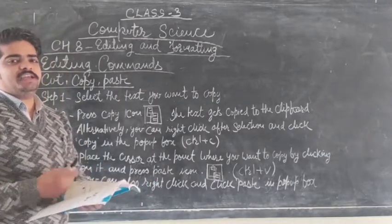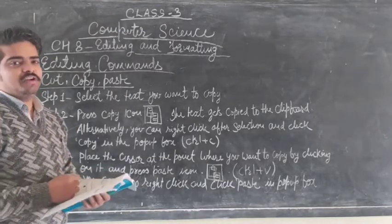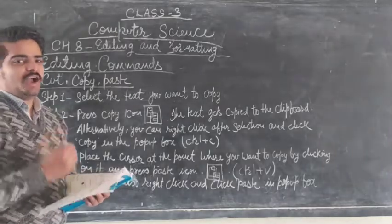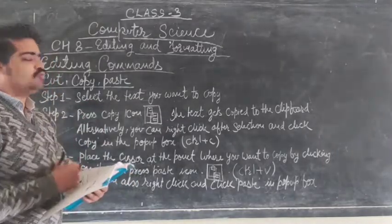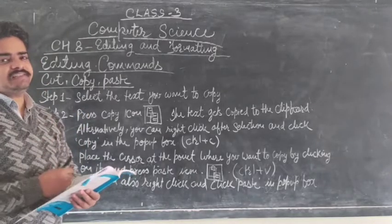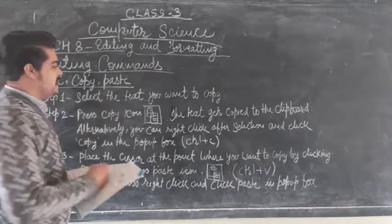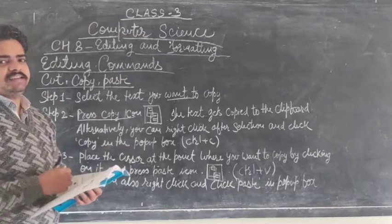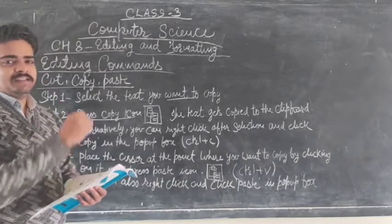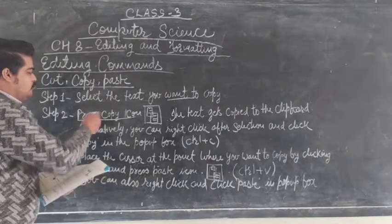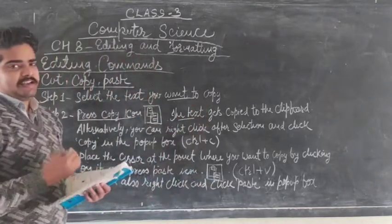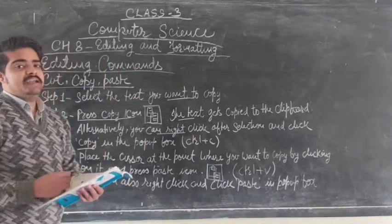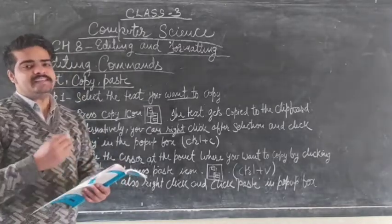Now the fourth editing option in MS Word is cut, copy and paste. For copy and paste: Step 1, select the text you want to copy. Step 2, press the Copy icon so the text gets copied to the clipboard. Alternatively, you can right-click after the selection and click the Copy command in the pop-up box.